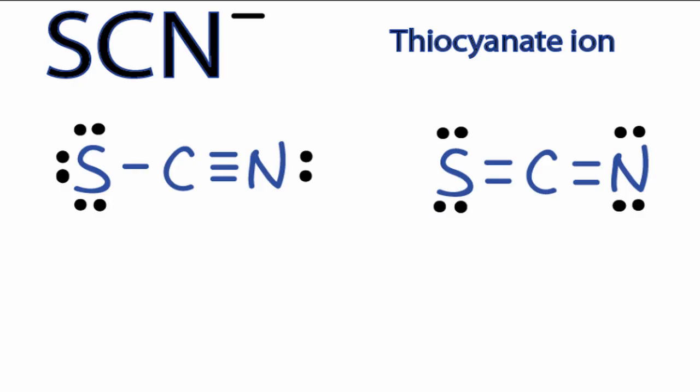Each of the Lewis structures for SCN minus that are drawn here are resonance structures. Each of these uses all of the 16 valence electrons that we started with, and the formal charges for each one add up to negative 1, which makes sense because we have a negative 1 charge on the ion.